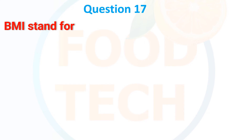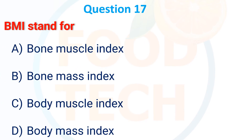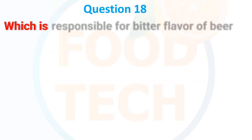Next MCQ: BMI stands for what? Options: (A) Bone Muscle Index, (B) Bone Mass Index, (C) Body Muscle Index, (D) Body Mass Index. The correct answer is D — Body Mass Index.